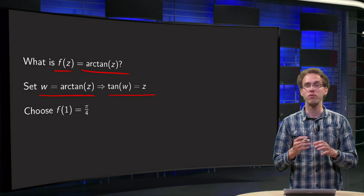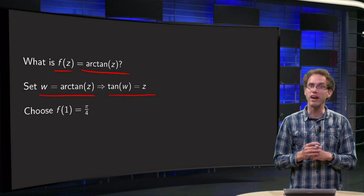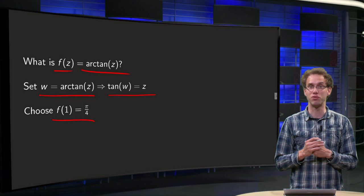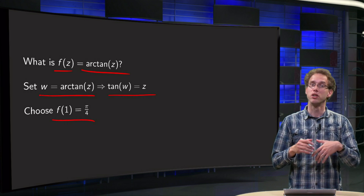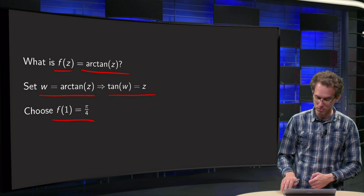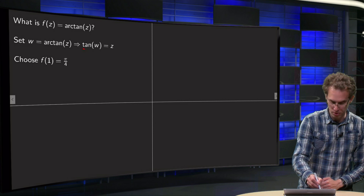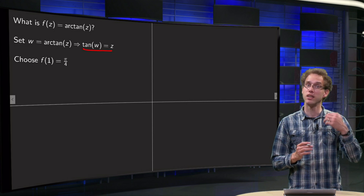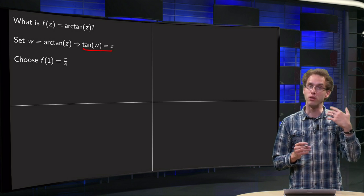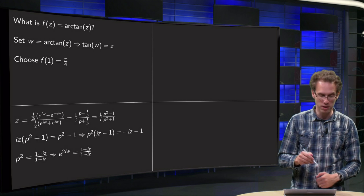As we will see later on, we have to make a choice somewhere of some branch, and we will set f of 1, or the arctangent of 1, to pi over 4, so it coincides with the normal real arctangent. So let's solve for w: tangent of w equals z, tangent w equals sin of w over cos of w. You know what the sine of w is, you know what the cosine of w is, so let's plug them in.